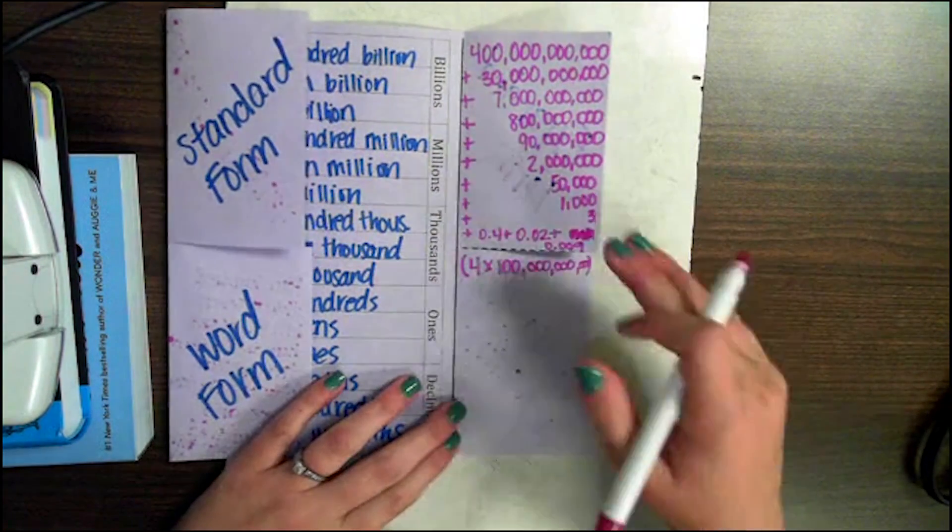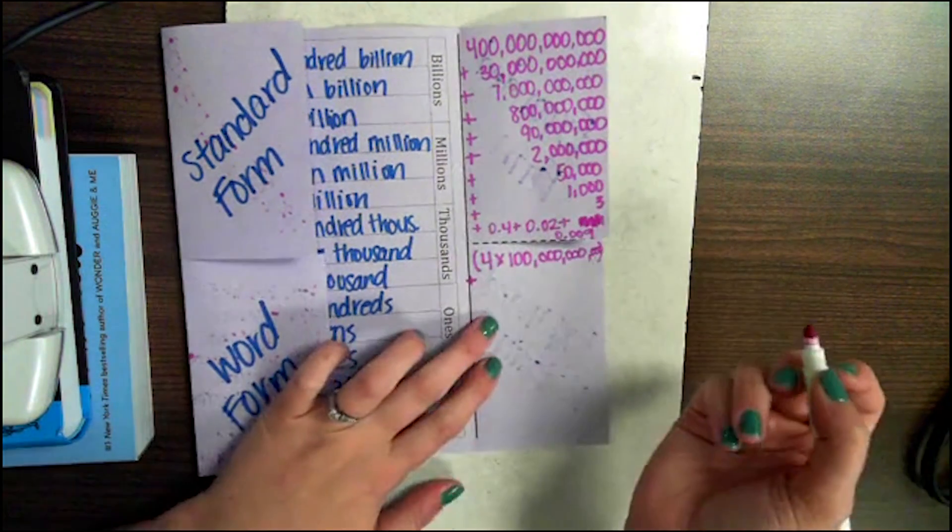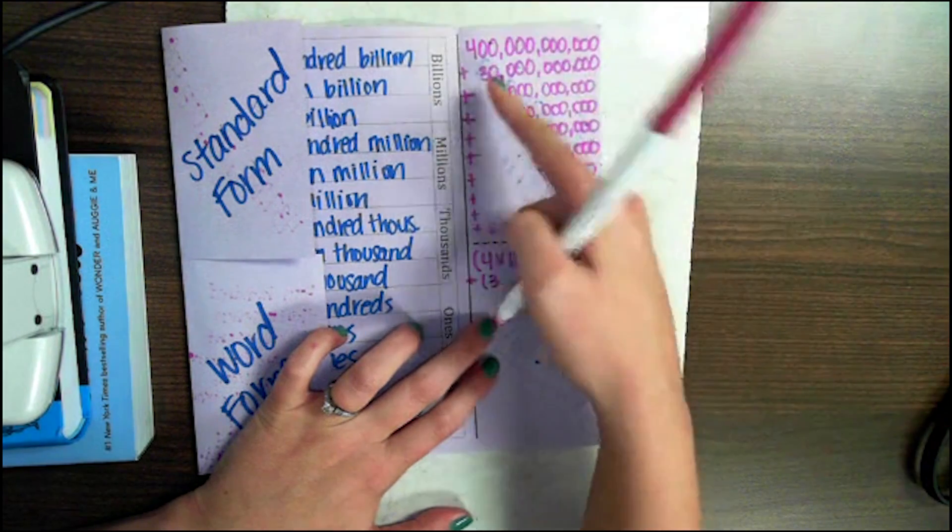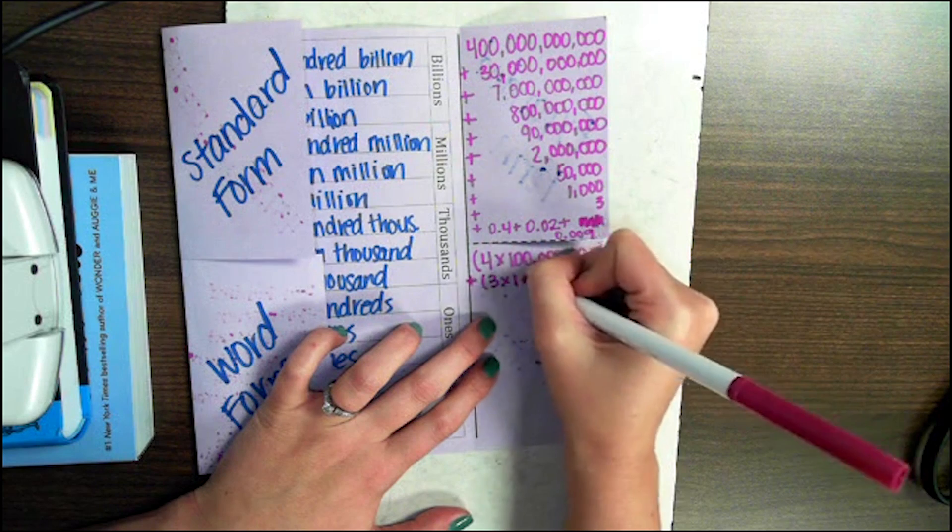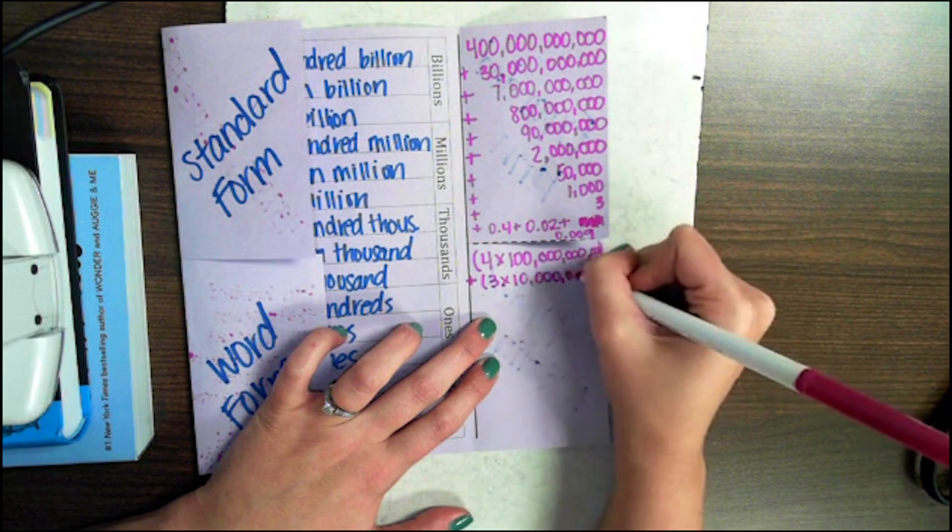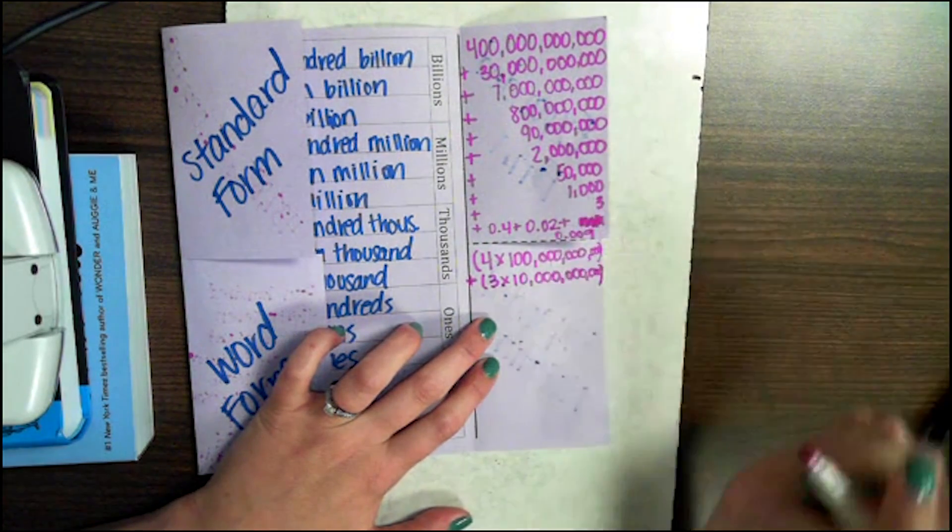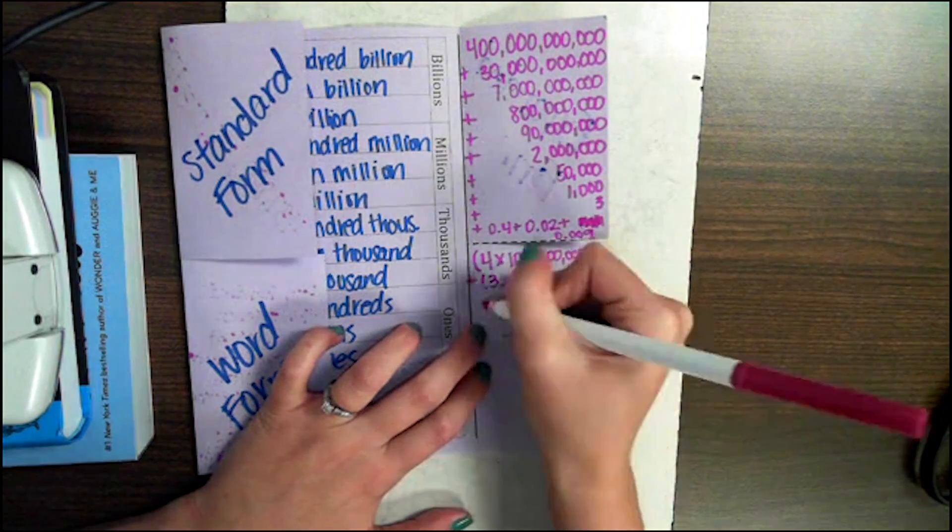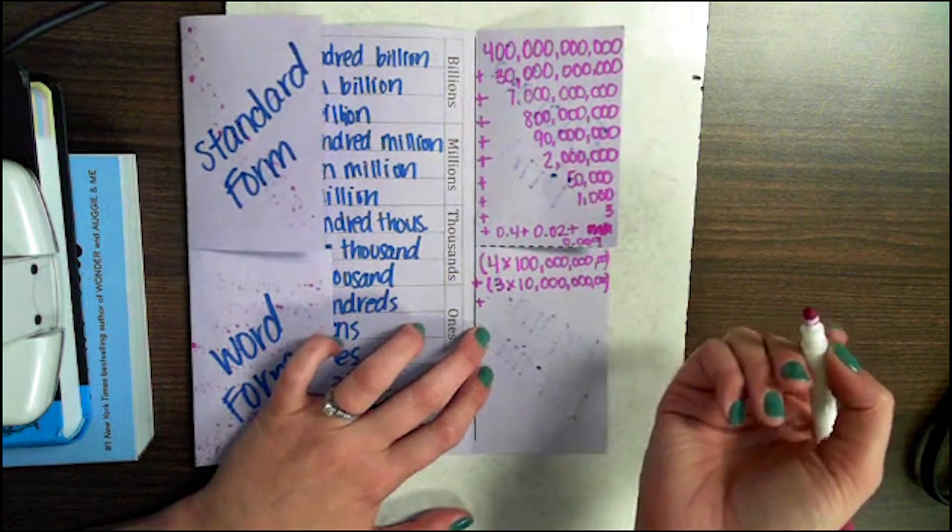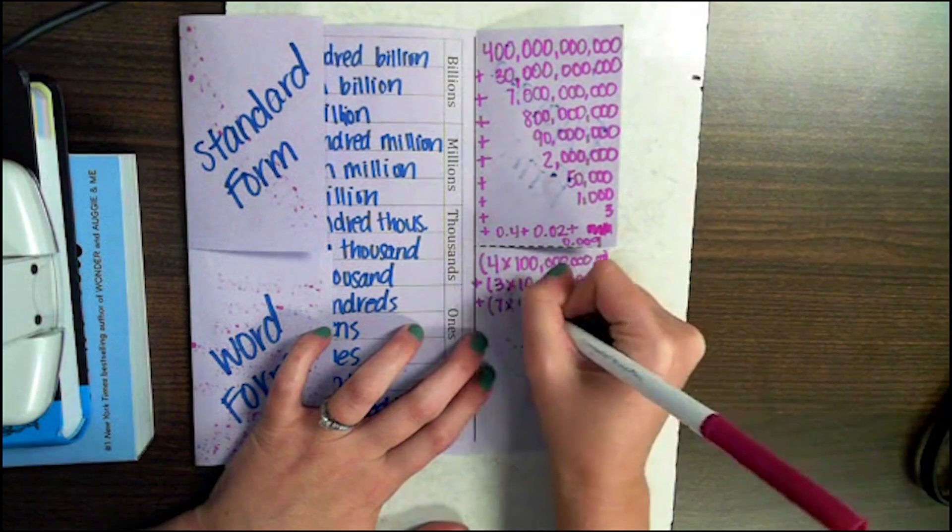Expanding it out like that, and then we're going to add 3 times 10 billion, since our 3 is in the 10 billions place value. Our next number is in the billions place, the 1 billions place value, so we're just going to do 7 times 1 billion.